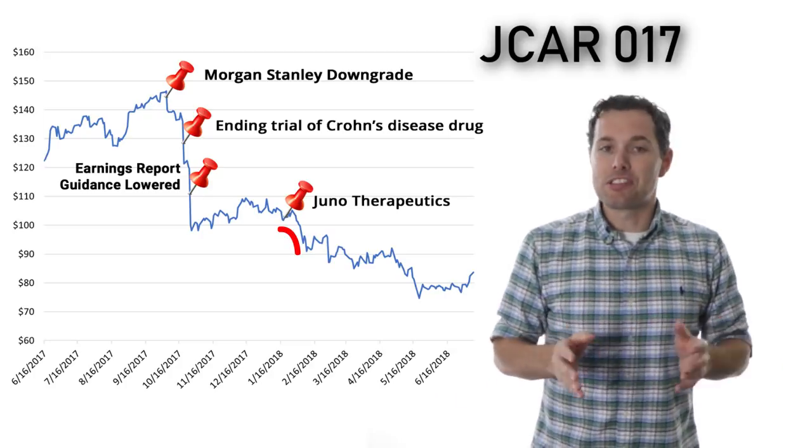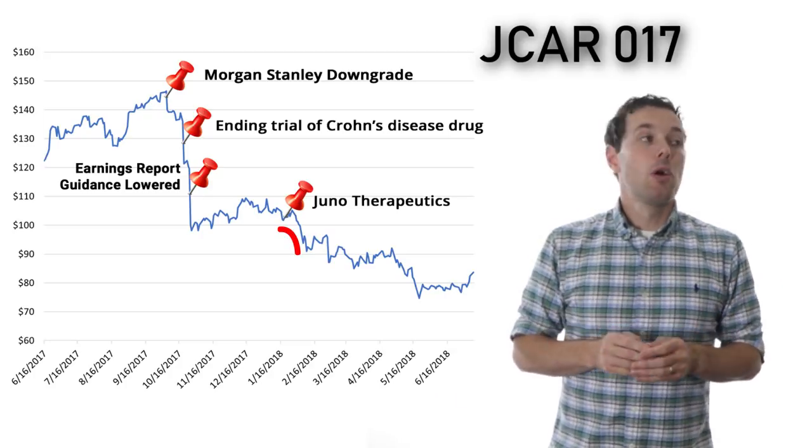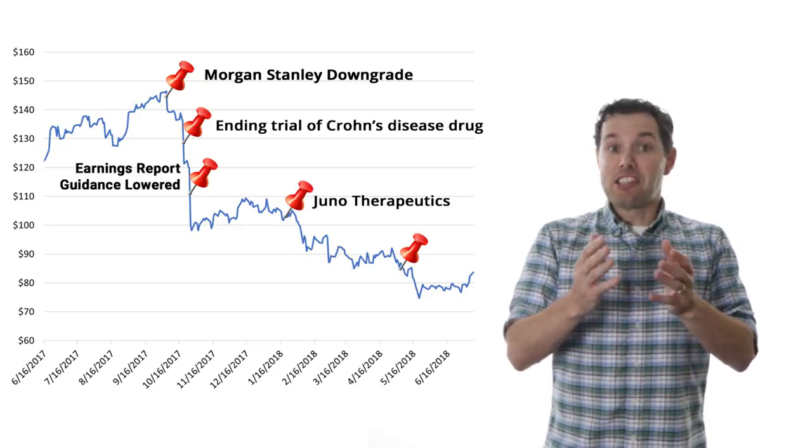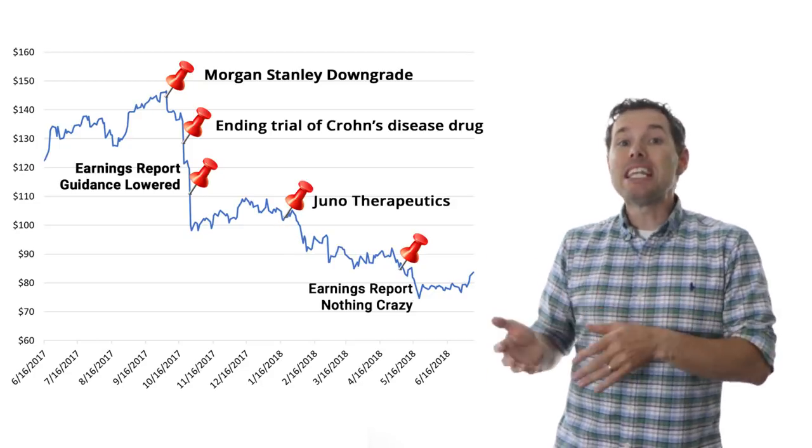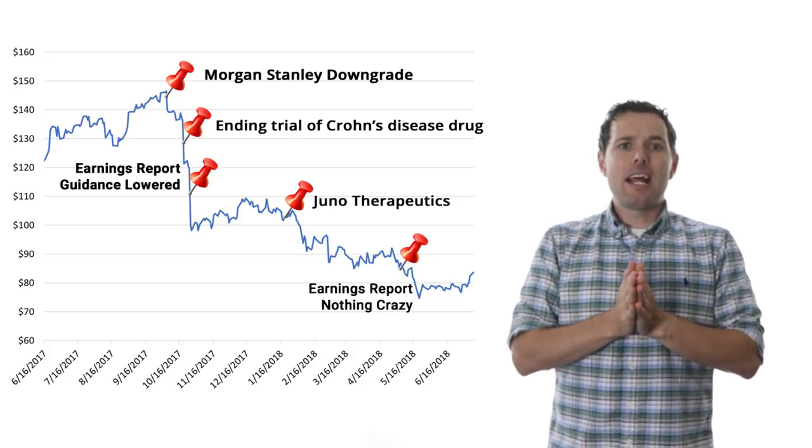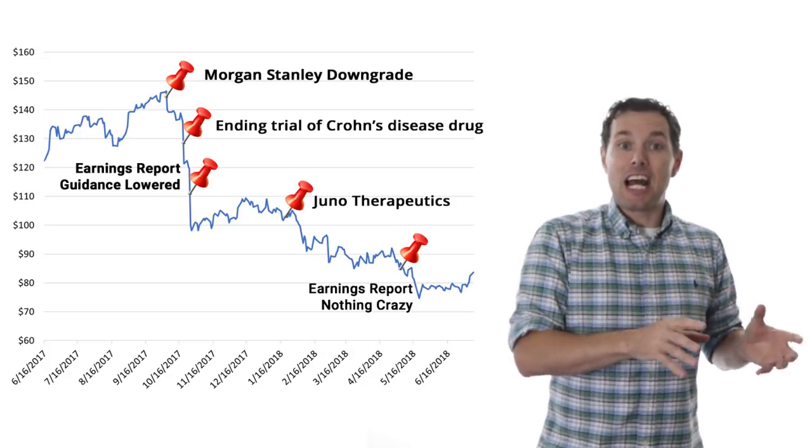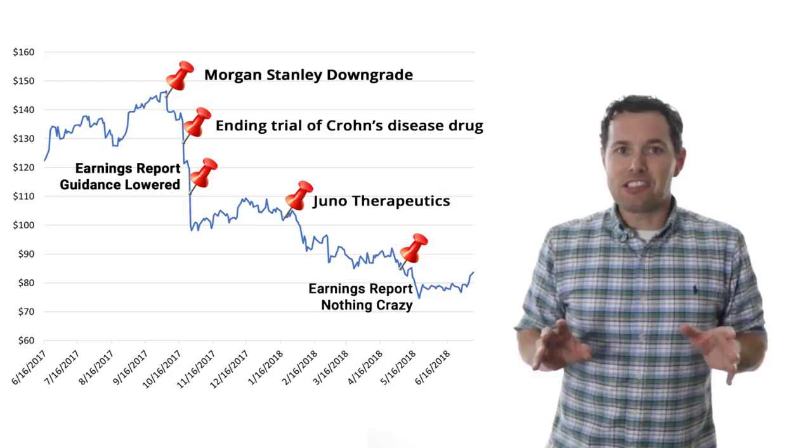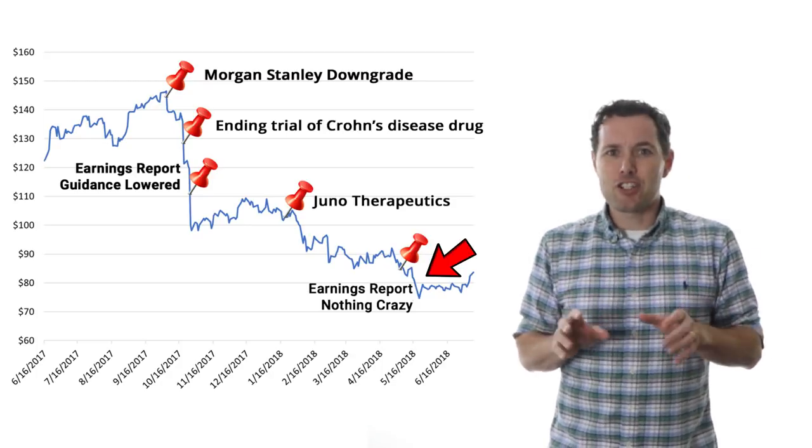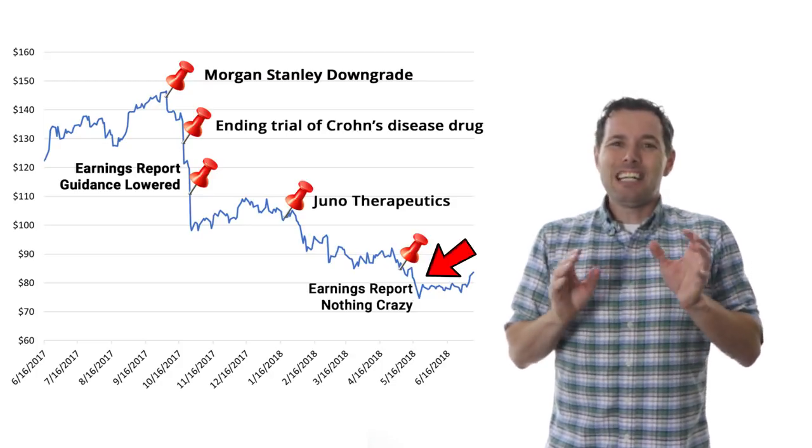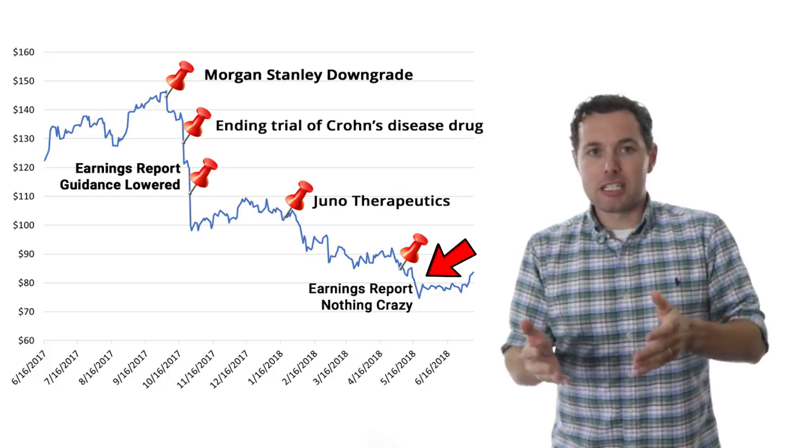Well, we skip forward a bit and Celgene once again reports earnings, and this time they beat EPS estimates and they stick with their previous guidance for 2020, so nothing crazy happens. The stock has a little bit of a slide shortly thereafter, but it was mostly about an article that had come out about the head of business development who left months before.